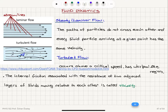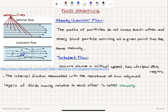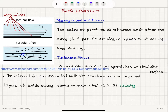The internal friction associated with the resistance of two adjacent layers of fluids moving relative to each other is called viscosity. It's basically analogous to friction in solids. We have layers of fluids moving with respect to each other, and there is a friction that develops between them which is due to the viscosity of the fluid.